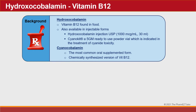Hydroxycobalamin is vitamin B12 that we find in food. It's also available in injectable forms: hydroxycobalamin injection at 1000 micrograms per mL in 30 mL vials, and also as Cyanokit, a 5-gram ready-to-use powder vial indicated in the treatment of cyanide toxicity. Cyanocobalamin is the most common oral supplemented form of vitamin B12 and is the chemically-synthesized version.